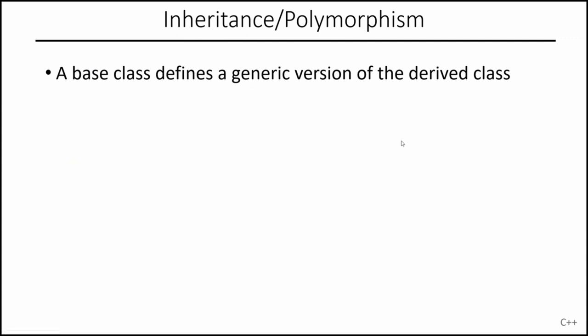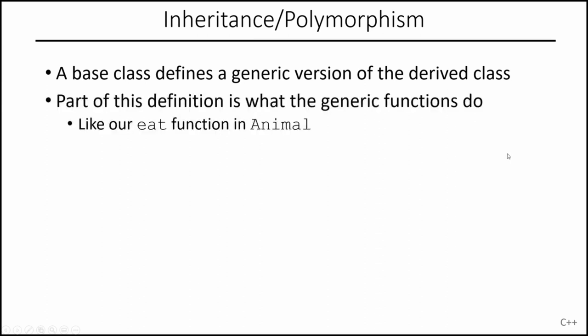A base class defines a generic version of the derived class. When we talked about use cases for inheritance, we said the base class defines a generic version, and part of that definition is what the generic functions do — like the eating function in the animal class. That's part of the description of our generic class. So our generic class is animal, which has a generic eating function.